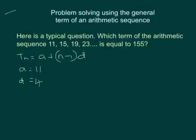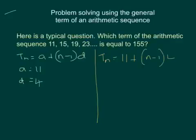So using that information, we'll just do our working over here. We can substitute these values into our equation and we get the following general term. So t_n is equal to 11 plus (n minus 1) times 4.